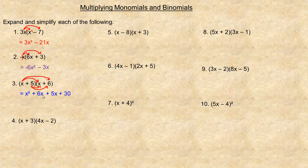The middle terms 6x and 5x are like terms and add to 11x — not 11x squared, because adding like terms keeps the same kind of term. Think of x as an apple: six apples plus five more apples equals 11 apples. So the final answer is x squared plus 11x plus 30.